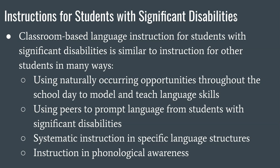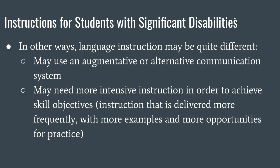Using peers to promote language from students with significant disabilities and systematic instruction on specific language structures — really focusing on specific tasks and specific instruction in phonological awareness. In other ways, language instruction may be different. There might be an AAC system in place — augmentative or alternative communication — which could be pictures, speech software, or computers. There may need to be more intensive instruction with more examples and more opportunities for practice, really working on the basic foundational skills to get them ready to succeed.